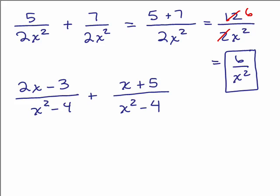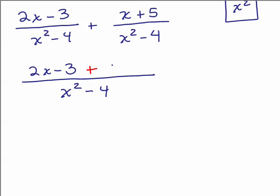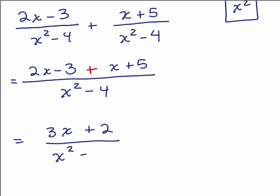In the next example, the common denominator is x squared minus 4, so we write that denominator once and add the numerators: 2x minus 3 plus x plus 5. Adding like terms gives 3x plus 2 over x squared minus 4. Now the question is: can this be reduced? Keep in mind, you may not cancel the 2 and the 4 — those are not full factors.